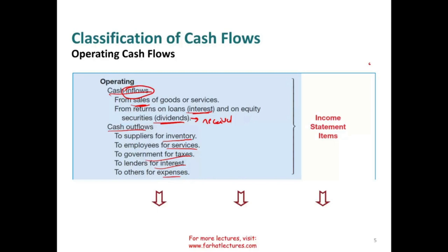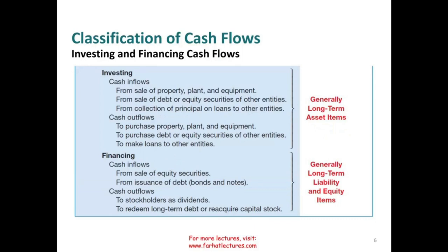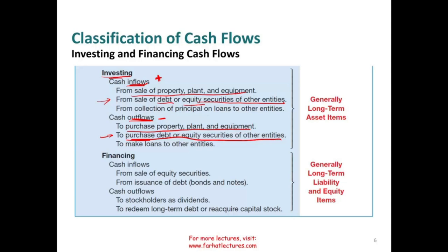Investing deals with property, plant, and equipment or investments. For investing, you could have cash inflow from the sale of property, plant, and equipment, or cash outflow when you purchase property, plant, and equipment. You could also sell or buy debt or equity securities — bonds and stocks — of other companies. When you sell them, it's a positive cash inflow; when you buy them, it's negative. You can also collect principal on loans to other entities — when you lend money out and collect it, that's a cash inflow; when you make the loan, it's a cash outflow.